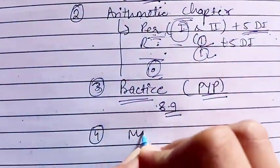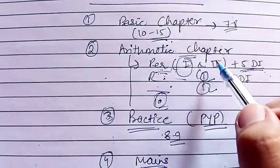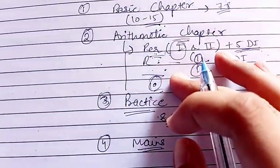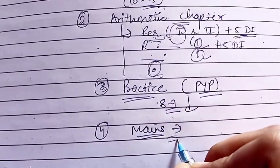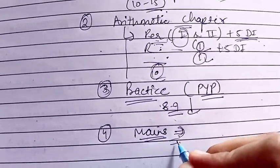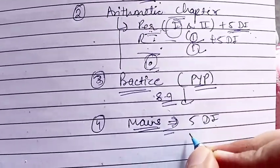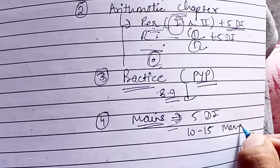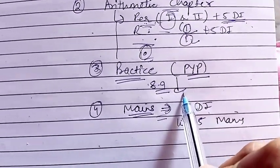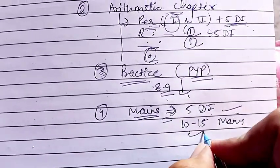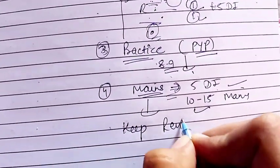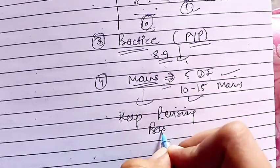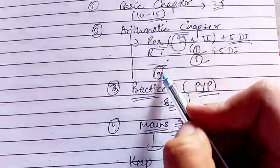After covering previous year papers, it is the right time to attempt mains mock tests. For prelims, you can start mock tests from when you begin the arithmetic chapters. For mains, after solving previous year papers, start mains mock tests and practice around five mains-level DIs plus 10 to 15 mains-level arithmetic questions on a daily basis. First do the previous year paper, then five mains DIs and 10 to 15 mains arithmetic questions daily.